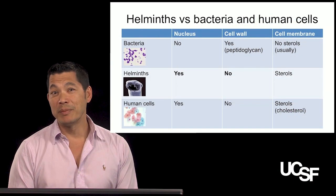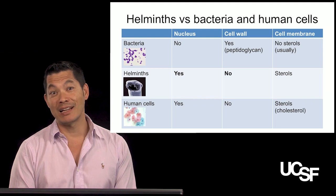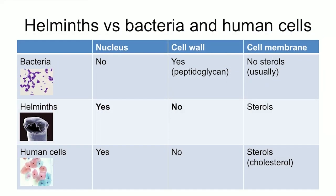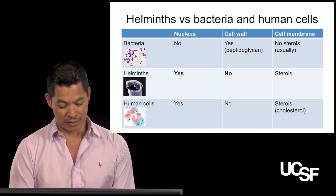How are helminths different from bacteria and human cells? Helminths are actually very similar to human cells. They're macroscopic, they have a nucleus, there's no cell wall in contrast to bacteria where there's a peptidoglycan cell wall, and the cell membrane in helminths and humans are very similar as well.